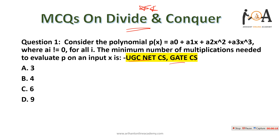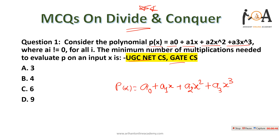This question was asked in UGC Net as well as in GATE CS. Consider the polynomial P(x) = A0 + A1x + A2x² + A3x³, where Ai ≠ 0 for all i, meaning A0, A1, A2, A3 are all non-zero. The minimum number of multiplications needed to evaluate P on input x is what?